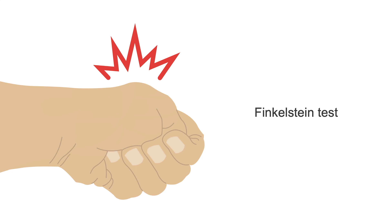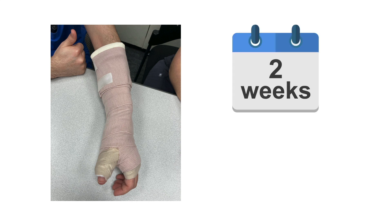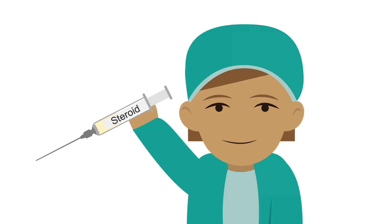The treatment is immobilization with a thumb spica splint for about two weeks along with a short course of NSAIDs. For recurrent or refractory cases, you can refer to a specialist to inject steroids into the tendon sheath.